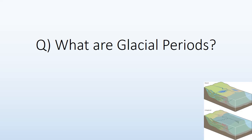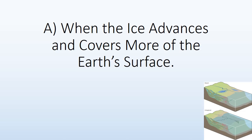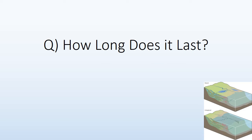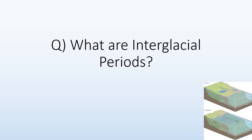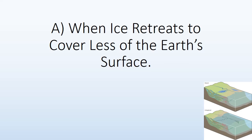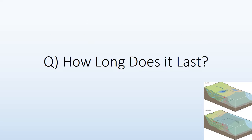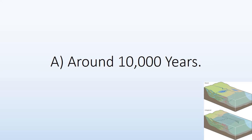Glacial periods are when the ice advances and covers more of the Earth's surface, lasting around 100,000 years. Interglacial periods are when ice retreats to cover less of the Earth's surface, lasting around 10,000 years.